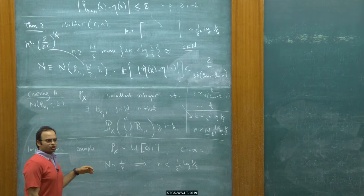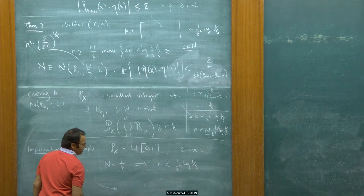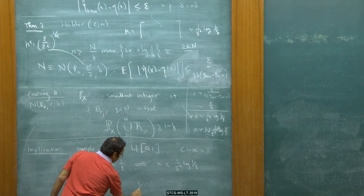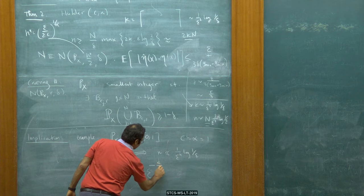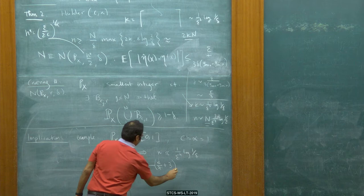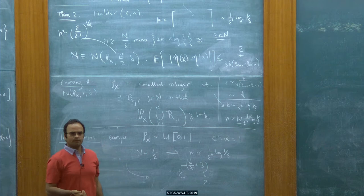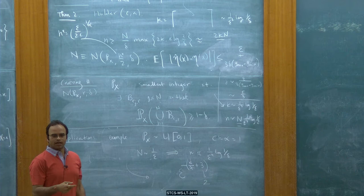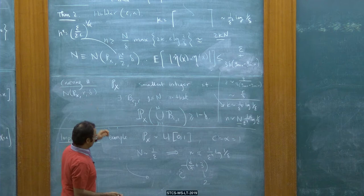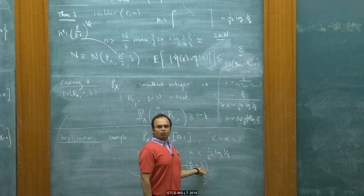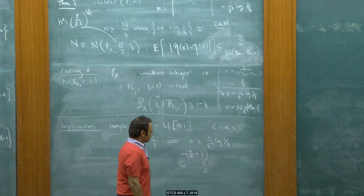More generally, under strong density conditions, this type of argument tells you that you need a number of samples scaling like epsilon to the power minus D over alpha plus 3 — ignoring logs. The optimal rate is known to be minus D over alpha plus 2 under strong density conditions. Strong density condition arguments explicitly utilize the fact that you have really nice balls. This argument doesn't utilize that — so in generality, you're losing a factor of 1 over epsilon, which corresponds to the plus 1 in the exponent.